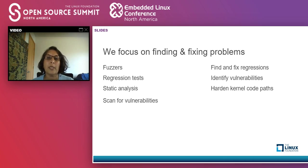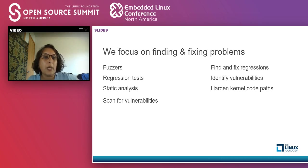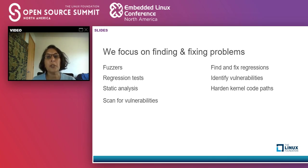Some of the ways we counter these problems: we use fuzzers, regression testing, static analysis, and vulnerability scanning. We find and fix regressions, identify vulnerabilities, and harden kernel code paths. When we introduce new features, we make sure we haven't regressed anything or introduced new vulnerabilities or bugs.